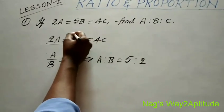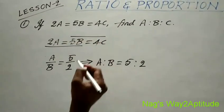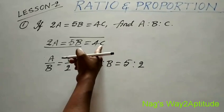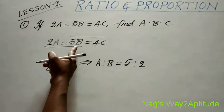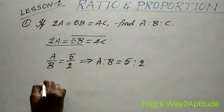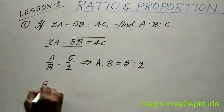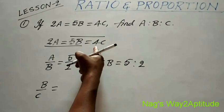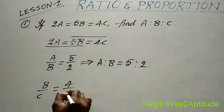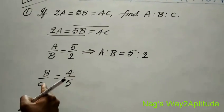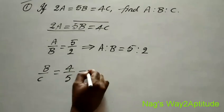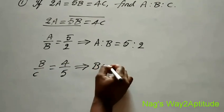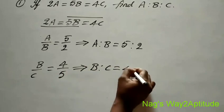Now you take these two terms: 5b is equal to 4c. The c comes here and it becomes b by c. The 5 comes here and it becomes 4 by 5. So b by c is equal to 4 by 5. Therefore, b is to c is 4 is to 5.